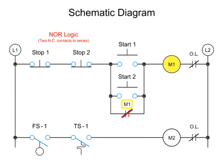In this arrangement, pushing stop button 1 or stop button 2, the M1 coil is shut off, and the M1 holding contact is deactivated.